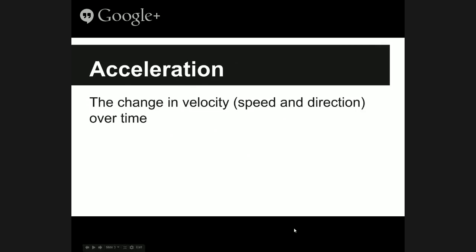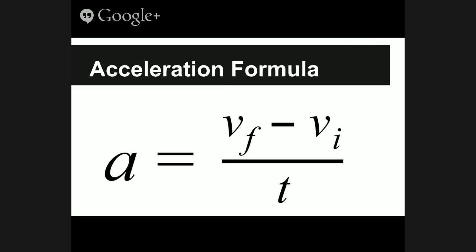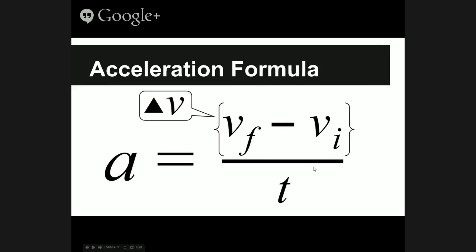Let's start with the definition. What is acceleration? Well, quite simply, it's the change in velocity — the change in speed and direction over time. This is the formula for acceleration: a is equal to vf minus vi, that's the final velocity minus the initial velocity, which we call a change in velocity, represented by delta v. And that's over t, the amount of time it took to make that change.